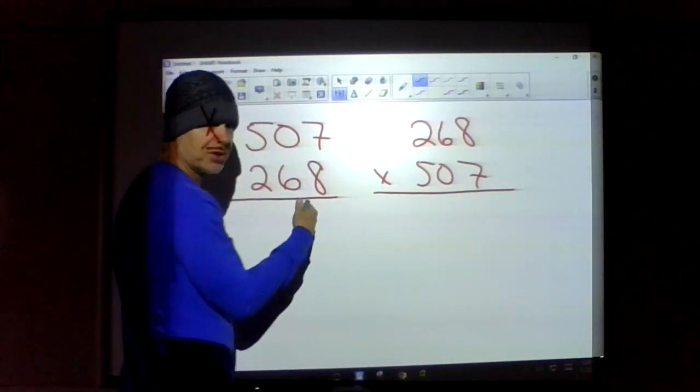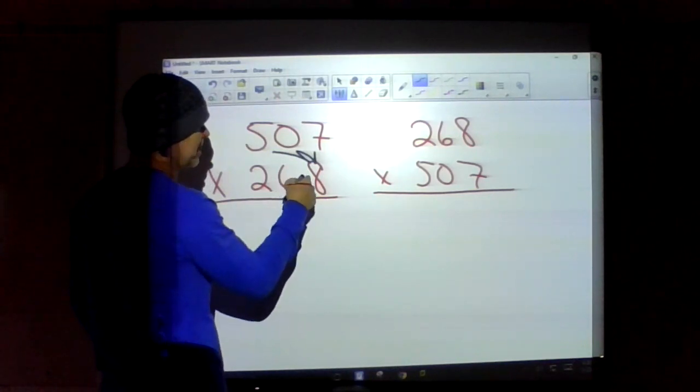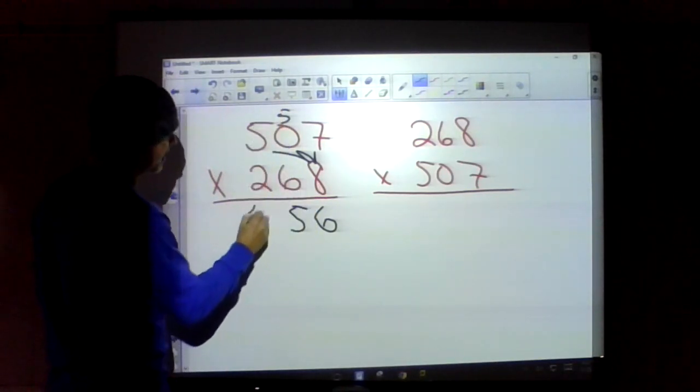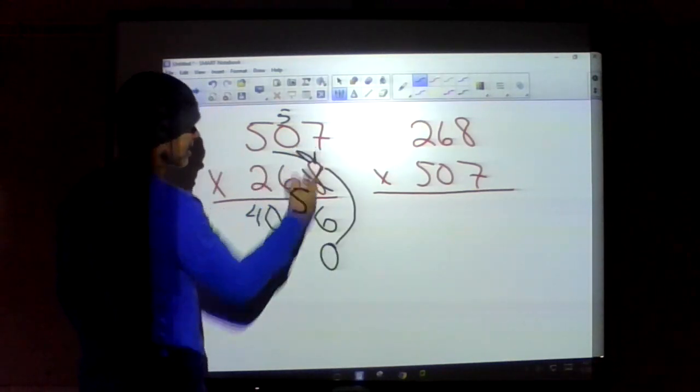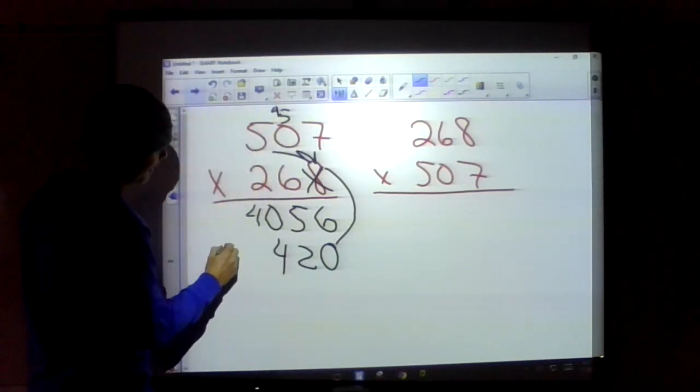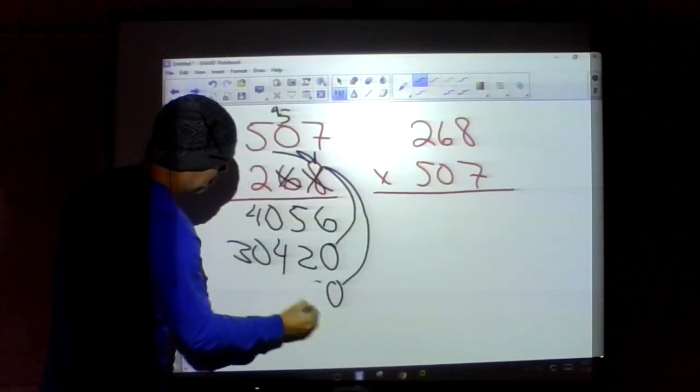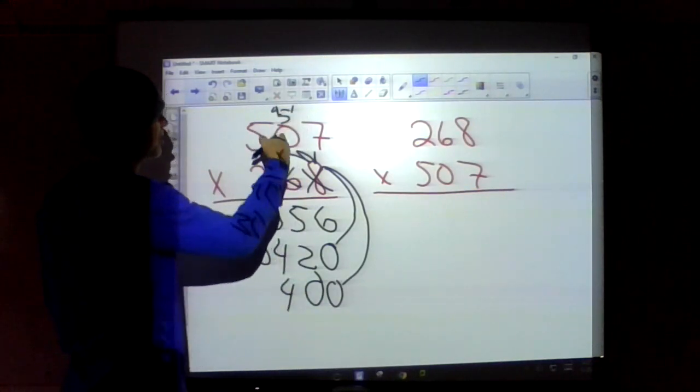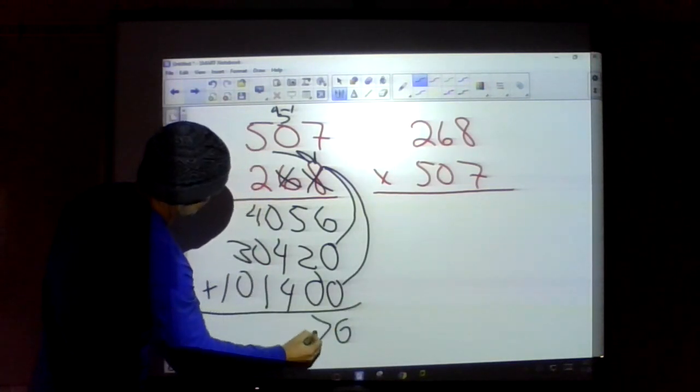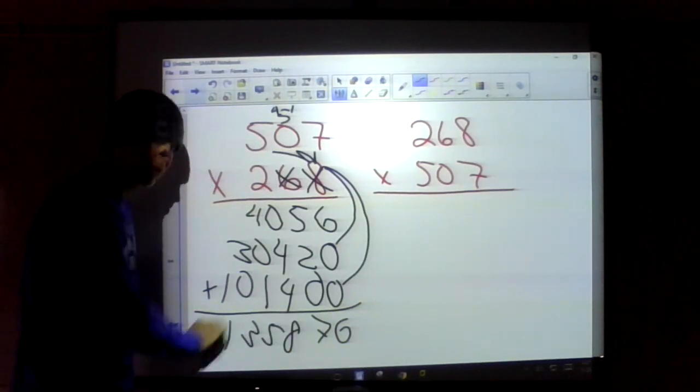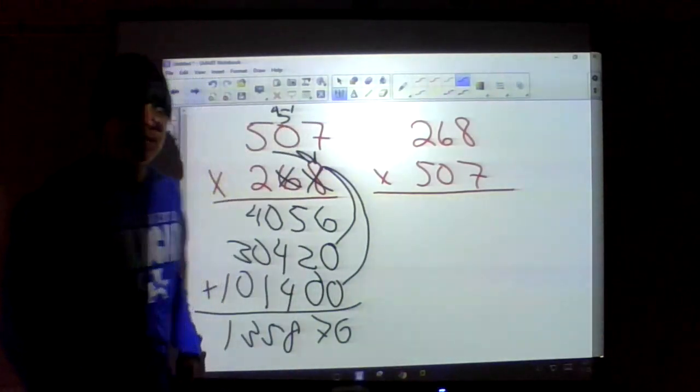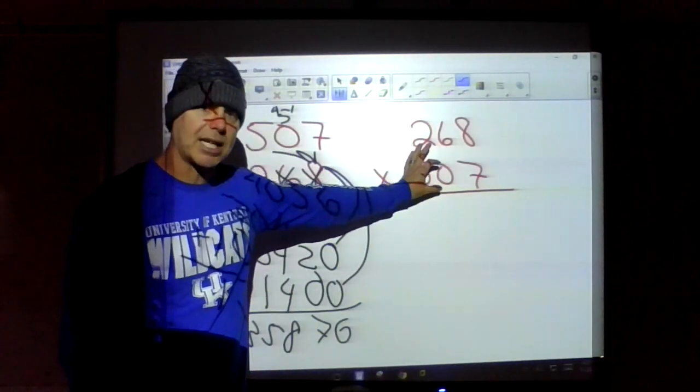I'm going to use standard algorithm. I'm going to multiply each digit times each one. Eight times seven is 56, carrying my five. Eight times zero is zero plus five is five. Eight times five is 40. X's and O's. Six times seven is 42. Six times zero is zero plus four is four. Six times five is 30. Two X's, two O's. Two times seven is 14, carry that one. Two times zero is zero plus the one is one, and two times five is ten. Add all these up: I get 135,876.